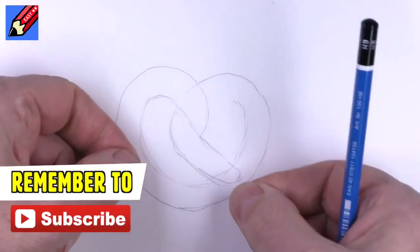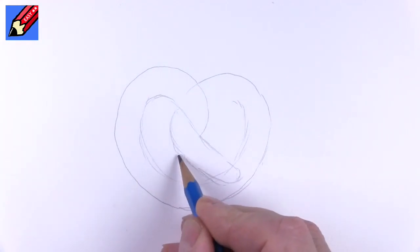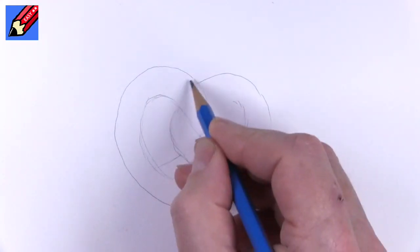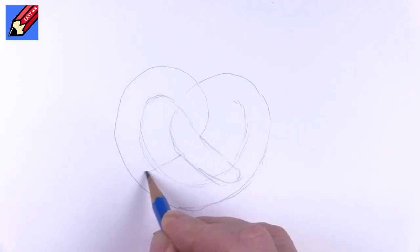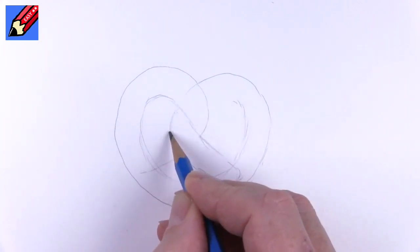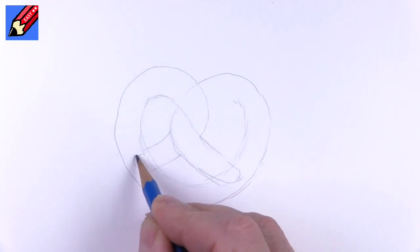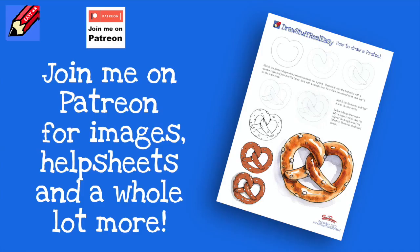Imagine when it's soft pastry and you're kind of pulling it out before it gets cooked and turns harder. So this line is kind of going on underneath there, and then we're going to want something similar around like that. Join me on Patreon for images, help sheets, and a whole lot more.